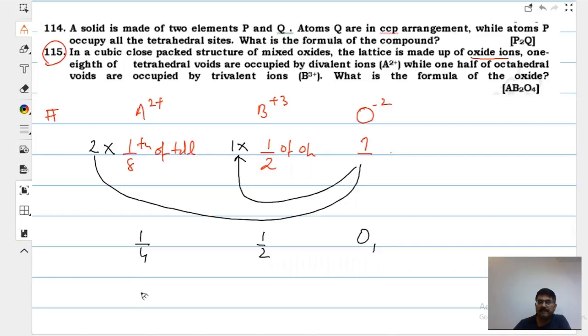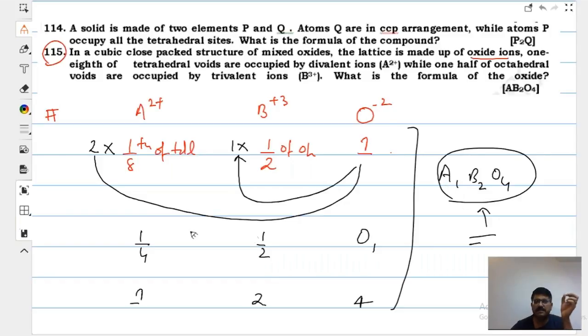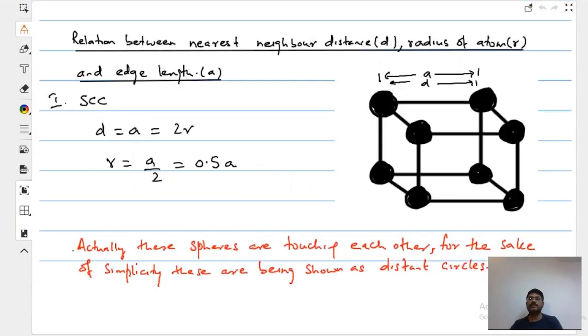That is what is going to be the formula. A1, B2, and O4. A1, B2, O4. Correct? Shall I move ahead? Anjir vachiyo? Sure. Here, yeah. Just think of the common factor. 0.25, 0.5 vachiyo, and this is going to be 1.